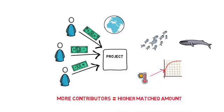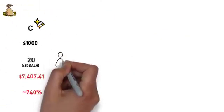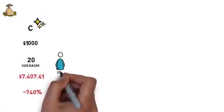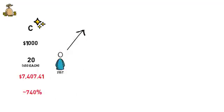As an example, imagine that our project C received its next contribution. If the 21st supporter contributes another $1, their $1 is matched by $26.97 which is almost 2700%, 27x of the contributed amount.